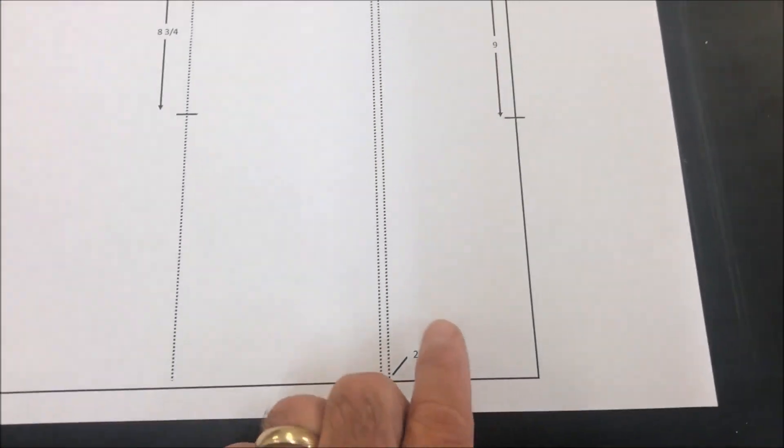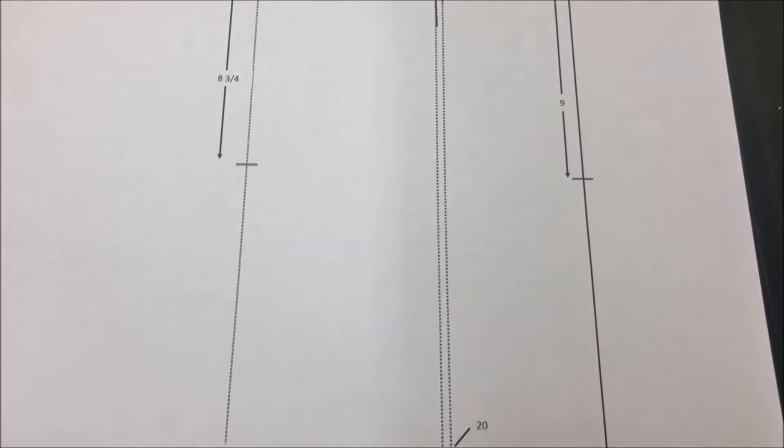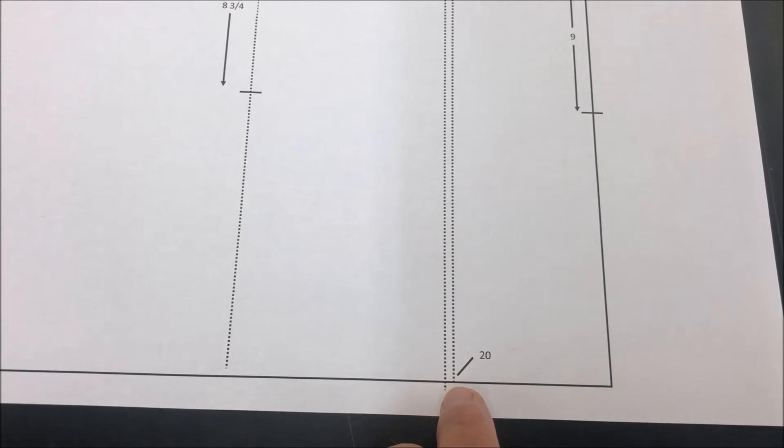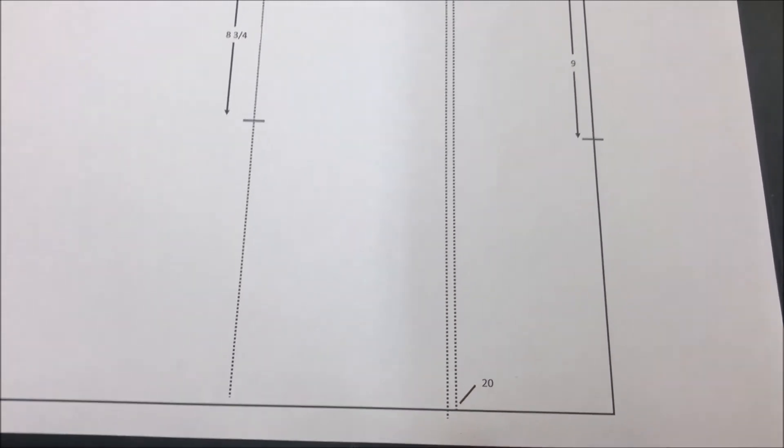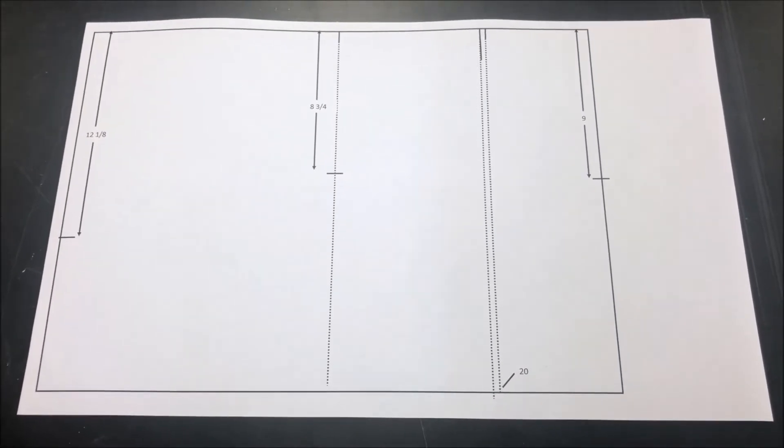Finally down here we're going to make a little tick mark pointed at the edge of the paper—this is on the five and three quarter line. These tick marks will help us describe the outside of the pattern.